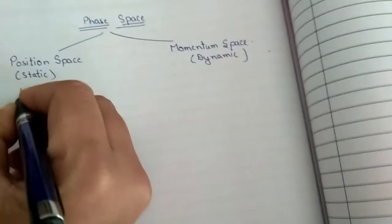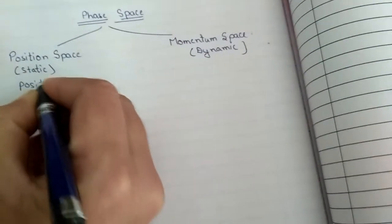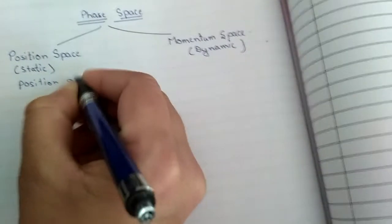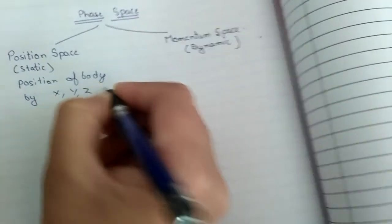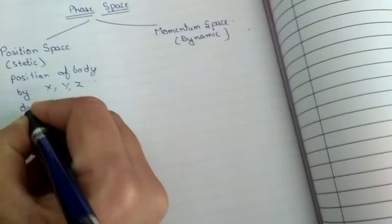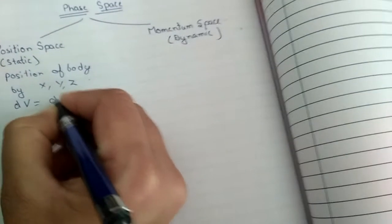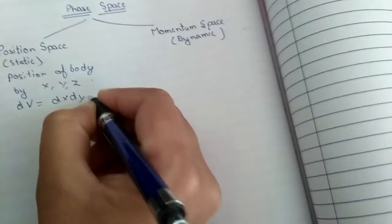In position space we define the position of the body by x, y and z axis. So its volume is represented by dV = dx multiply dy multiply dz.